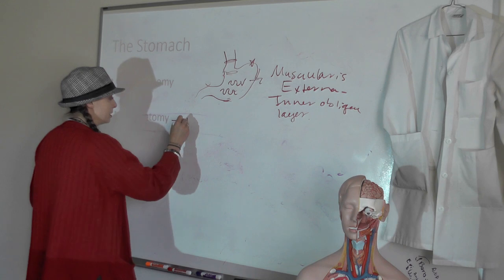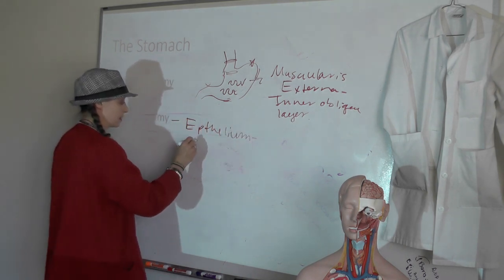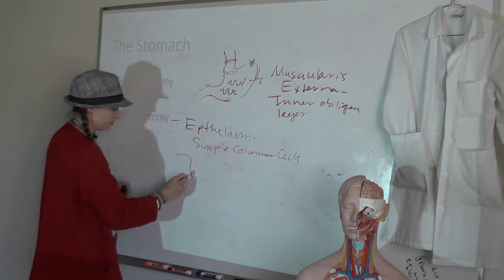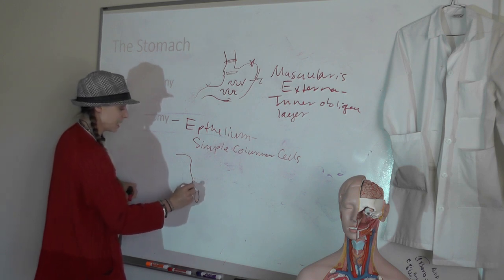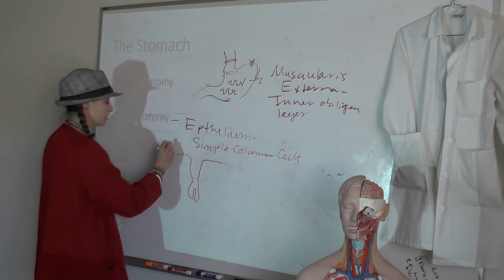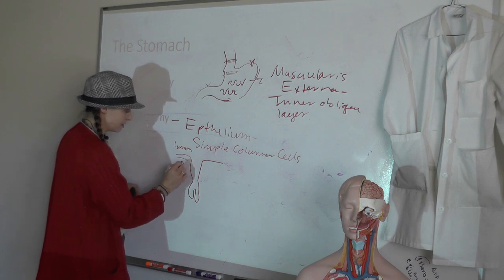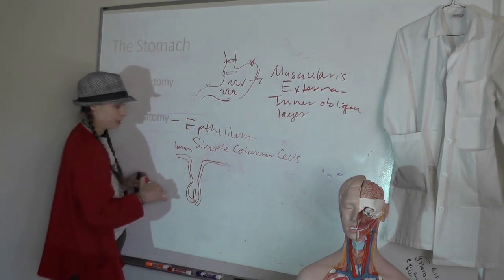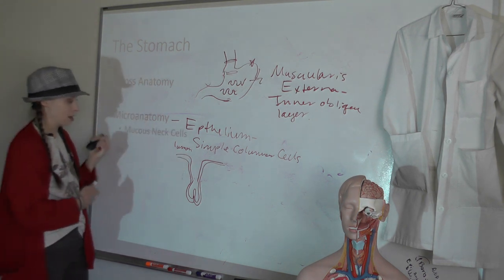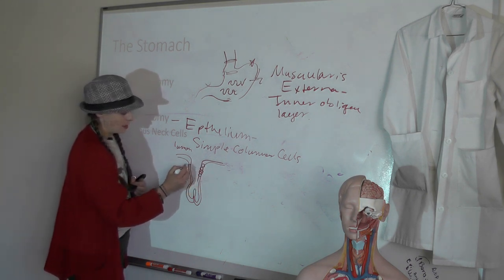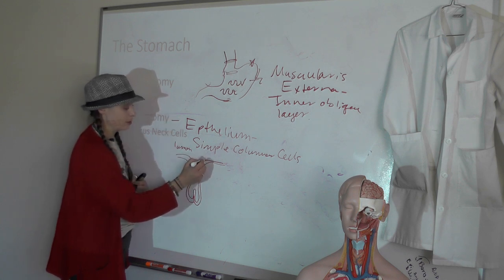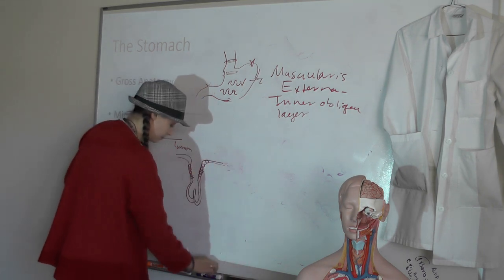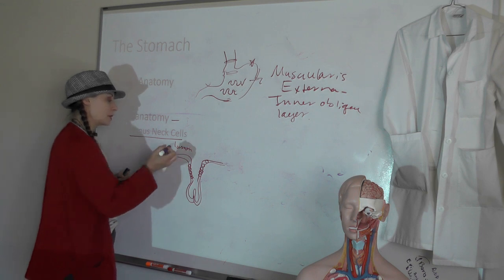If we zoom into the epithelium, we'd find simple columnar cells. We also see that the epithelial layer pokes down to form gastric pits and gastric glands. If this is the lumen where material is passing through, we have these gastric pits and glands formed in the mucosal layer. The gastric pits have specialized cells called mucus neck cells that secrete an extra thick mucus, creating a mucosal barrier.